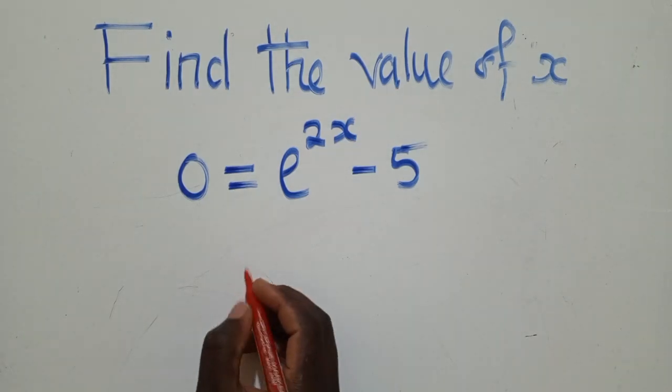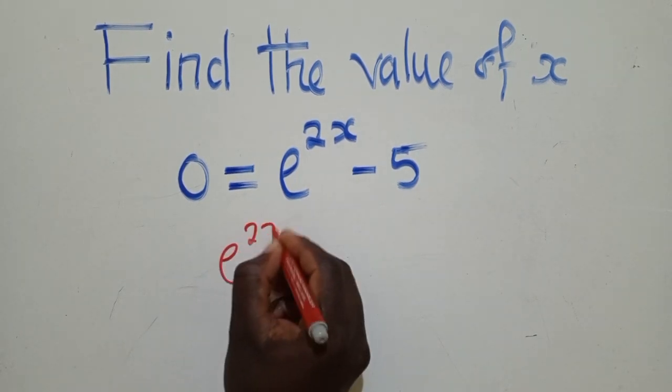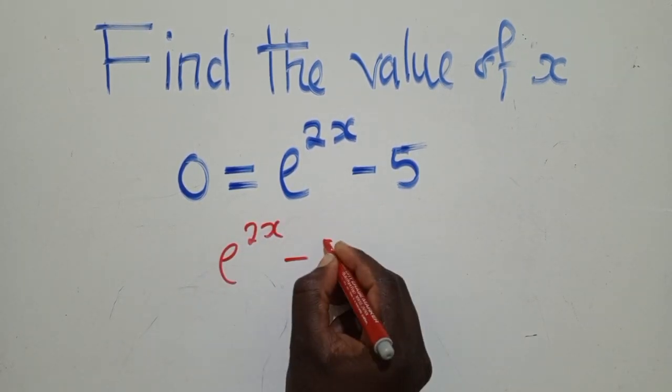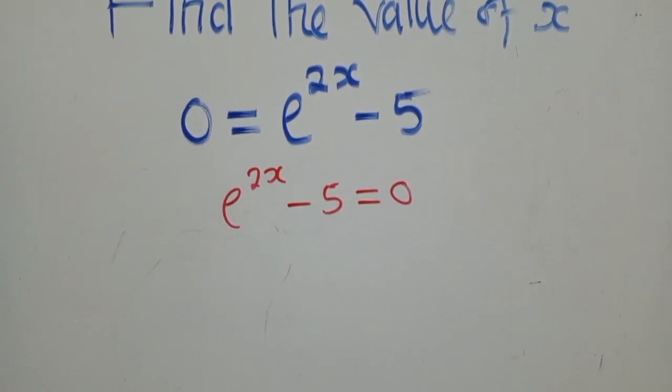The first thing must be to copy what we've been given. So we've got e power 2x minus 5 is equal to 0.